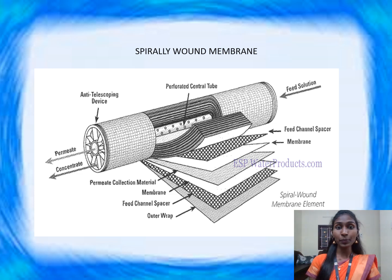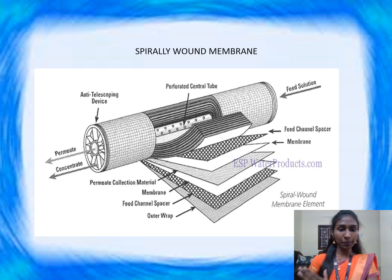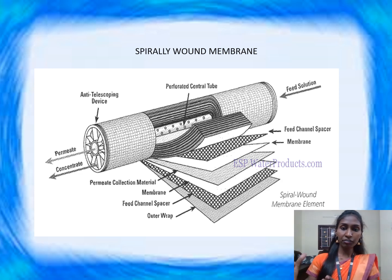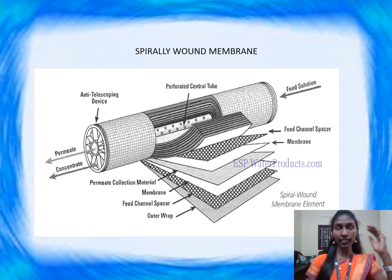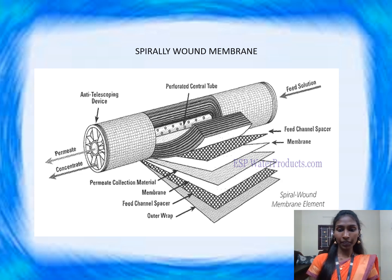This is the spirally wound module membrane. There are many layers for the separation purpose. The feed is applied at one end of the membrane, the permeate is collected at the other end, and the concentrate is collected at the bottom of the membrane.